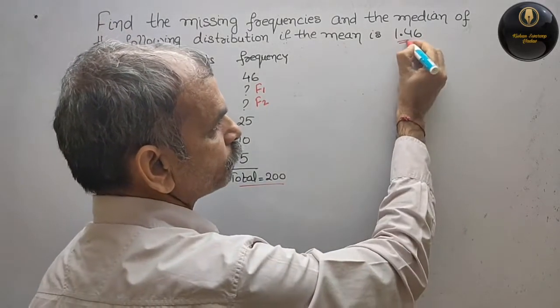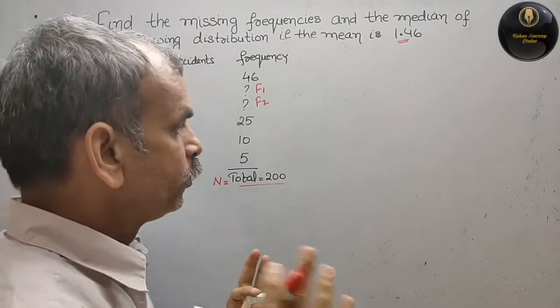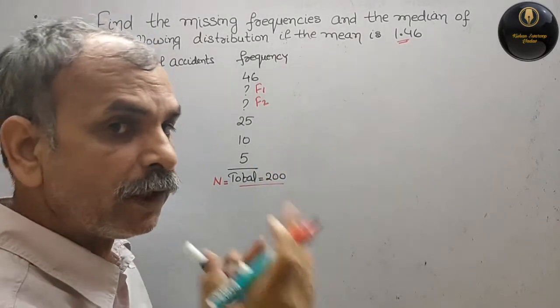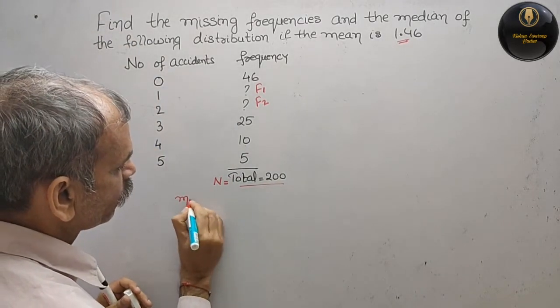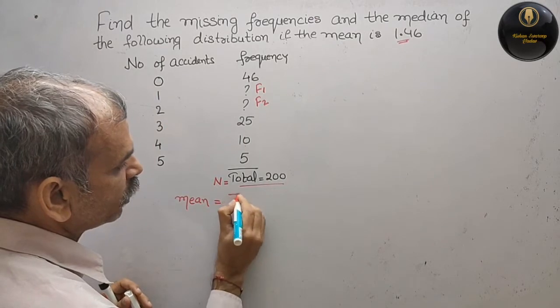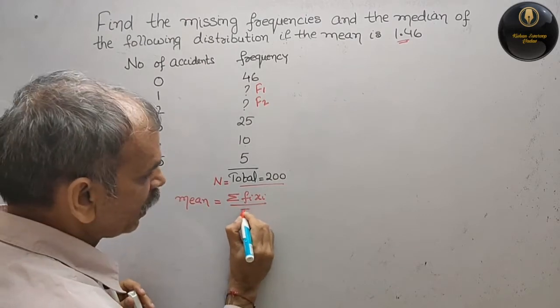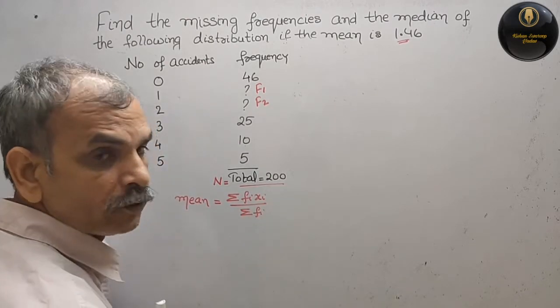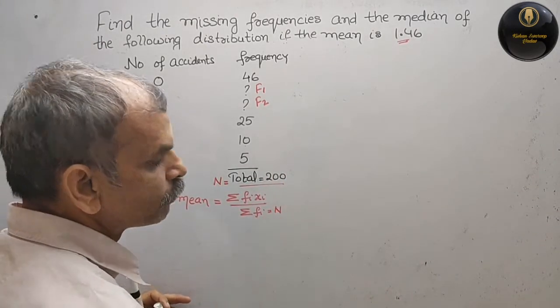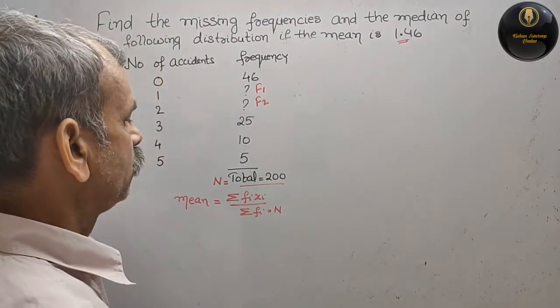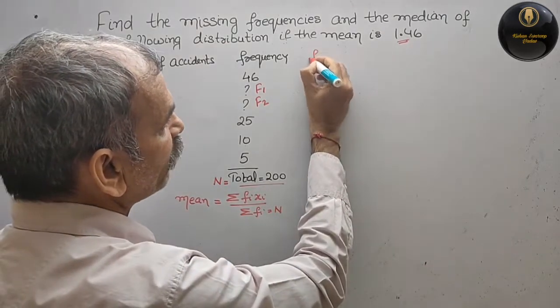Now they have given the mean, so we can go for a mean formula only to find out the missing frequency. We have already learned that our mean is equal to sigma f_i x_i by sigma f_i. So sigma f_i is 200, or you can say this is equal to n also.